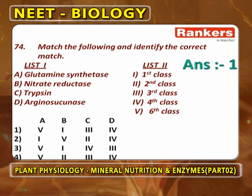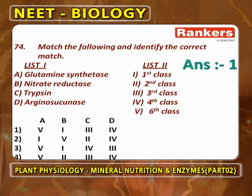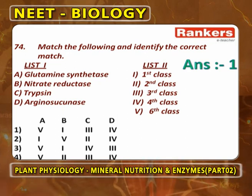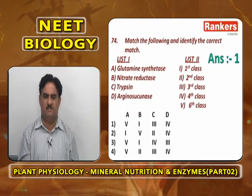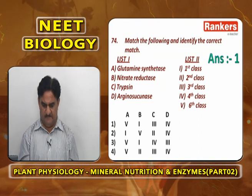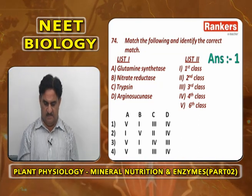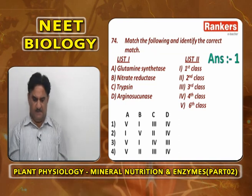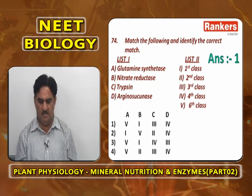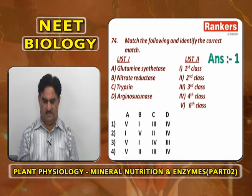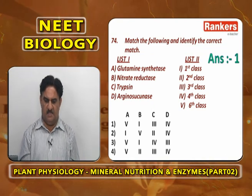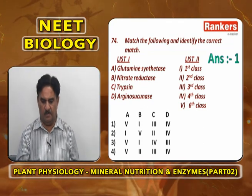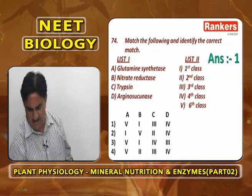Identifying enzyme classes: Glutamine synthetase is sixth class (ligases/synthetases). Nitrate reductase is first class (oxidoreductases). Trypsin comes under third class (hydrolyases). Arginosuccinase comes under fourth class (lyases). So A5 (glutamine synthetase–ligases), B1 (nitrate reductase–oxidoreductases), C3 (trypsin–hydrolyases), D4 (arginosuccinase–lyases).